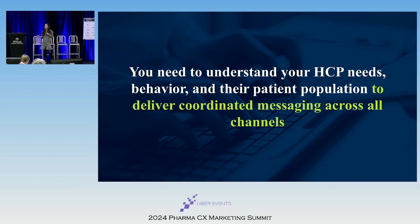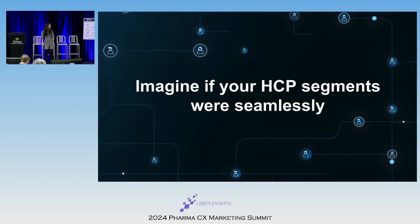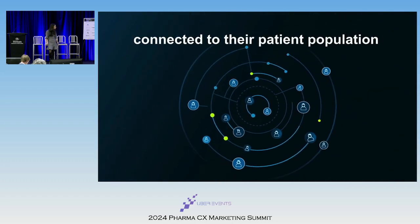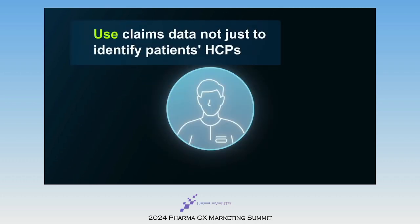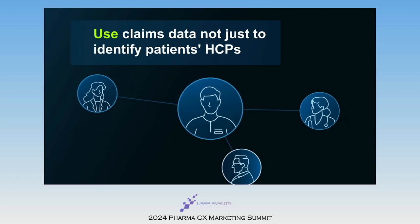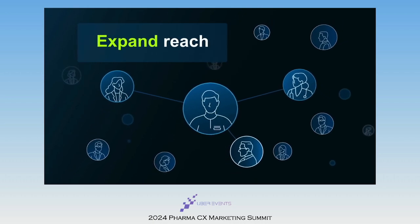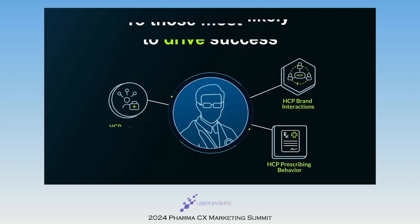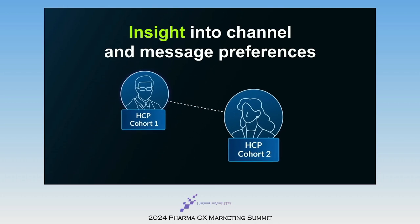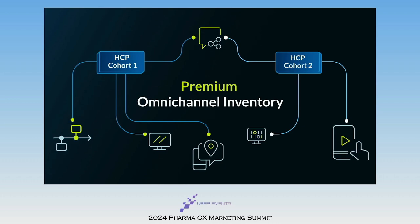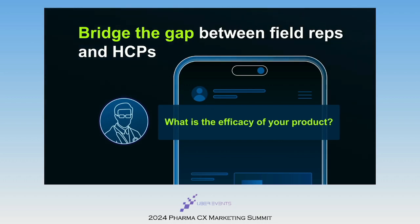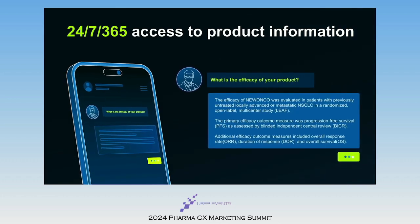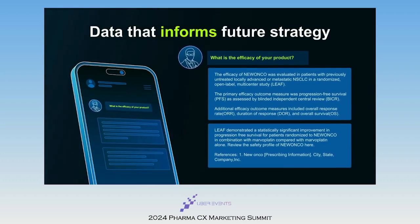When these pieces start to come together, you can really understand the needs of your HCPs and your patients. That's why we launched our HCP Pro Suite last month, which you are going to see in action. Imagine if your HCP segments were seamlessly connected to their patient population, all while maintaining HIPAA compliance. You could use claims data not just to identify patients' HCPs, but also to identify equivalent HCPs, expanding your reach, or address the complexity of determining the HCPs' brand impact to reach those most likely to drive commercial success. Think about having insights into HCP channel and message preferences, ensuring your media plan is spot-on and consistent across all channels for optimal performance, or bridging the gap between your field reps and HCPs, providing 24-7, 365 access to product information with conversational AI, and being able to use that data to inform future commercial strategy.